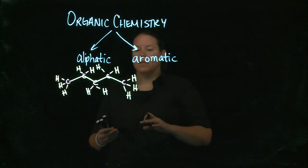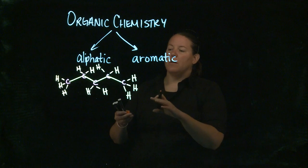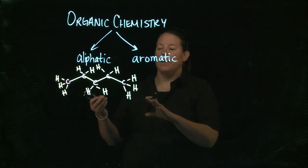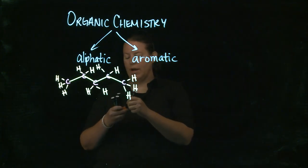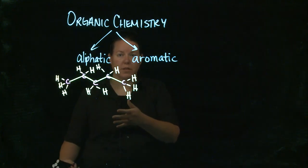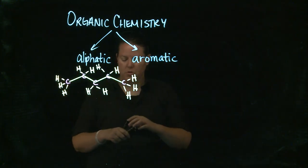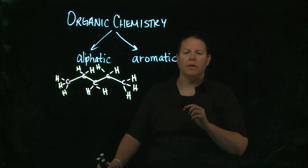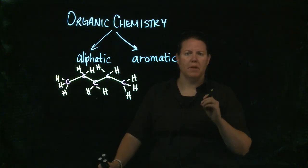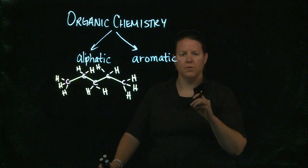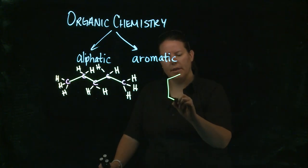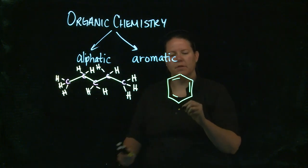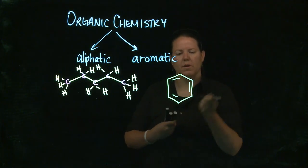So aliphatic means that the carbons have some kind of bonding to one another that is such that you have basically an open structure. Aromatic is very specific. It means that it has to be cyclic, it has to be planar, and it has to follow Huckel's rule. In terms of looking at that, the most common aromatic compound tends to be something like benzene.